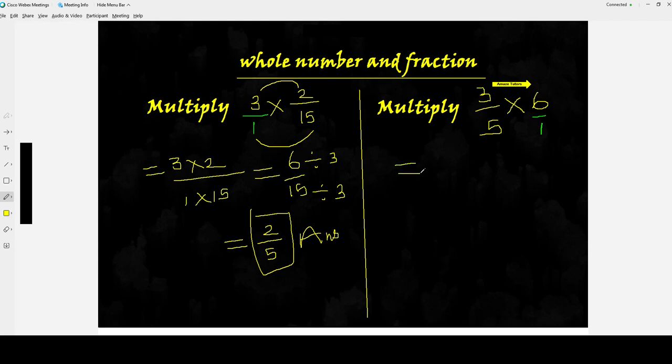Same manner. Next question, I have already converted 6 to a fraction, 6 by 1. So you can also do the same. Whenever it is a whole number, if it is multiplication or even for addition, subtraction, whatever may be the operation, you change the whole number to fraction by writing 1 in the denominator. Now continue doing the steps. 3 sixes are 18, 1 five, fives are 5.